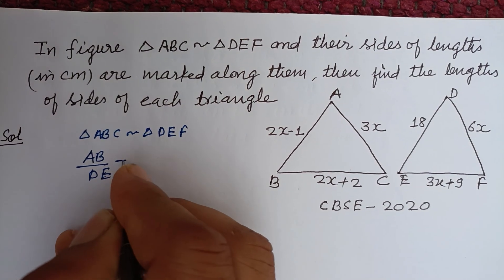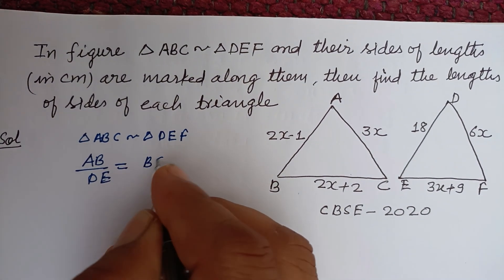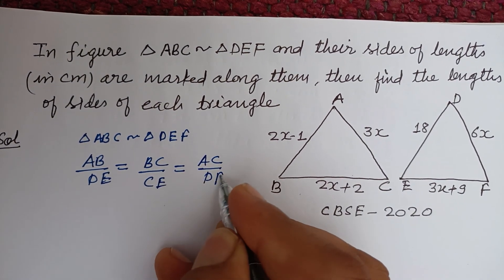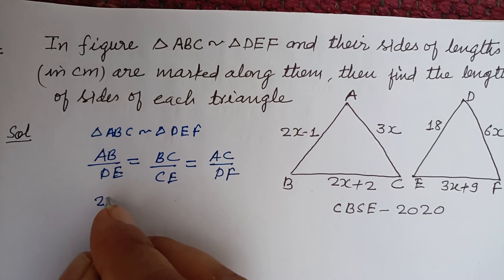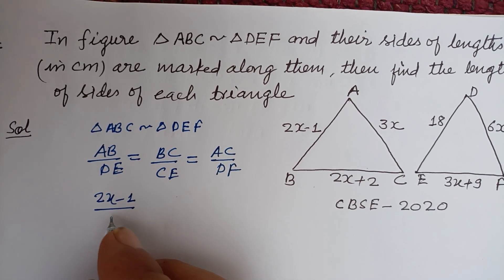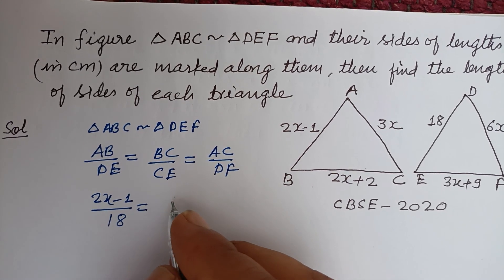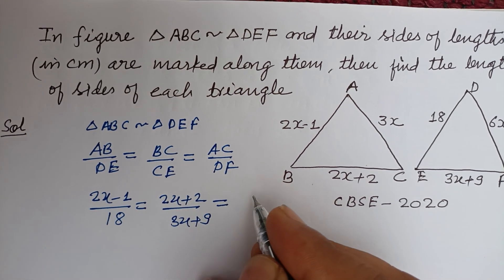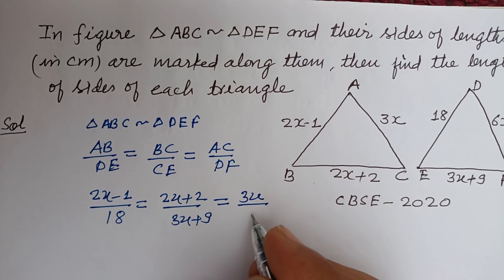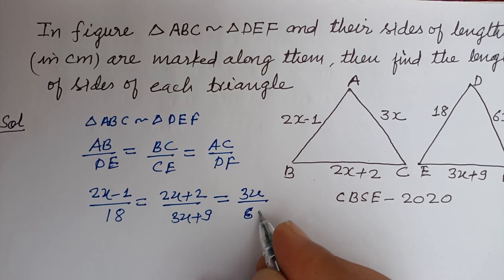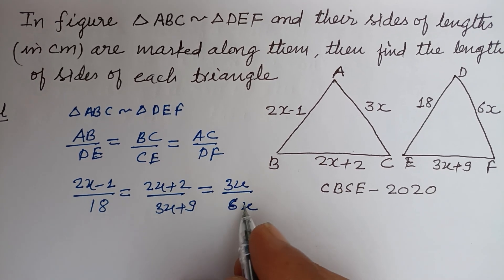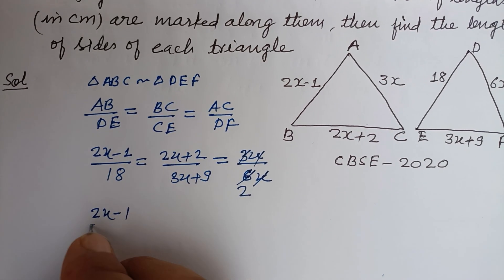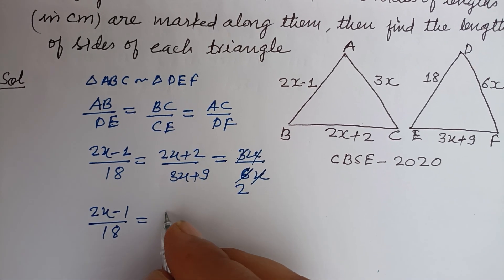Putting these values: AB is 2x minus 1 over 18, BC is 2x plus 2 over 3x plus 9, and AC is 3x and DF is 6x over 2. From the figures, now x cancels, 3 to 6, so 2x minus 1 upon 18 equals 2x plus 2 over 3x plus 9 equals 1 by 2.